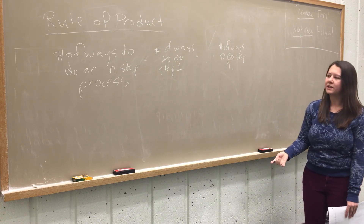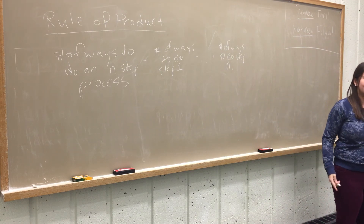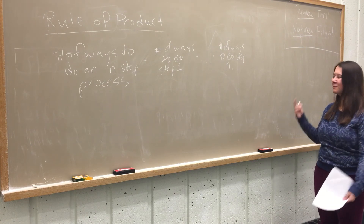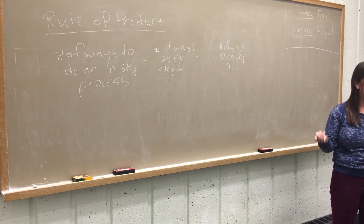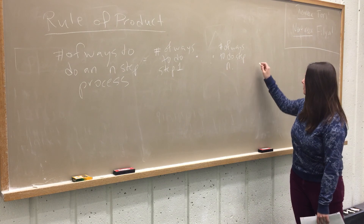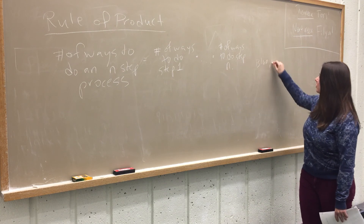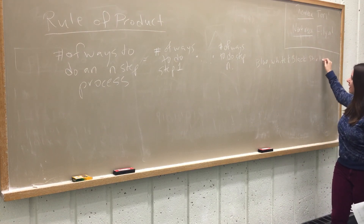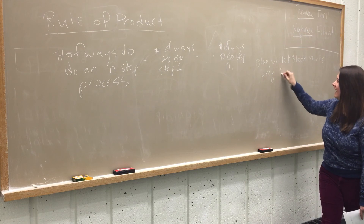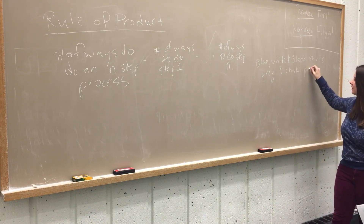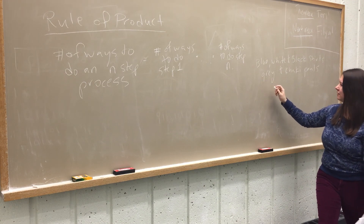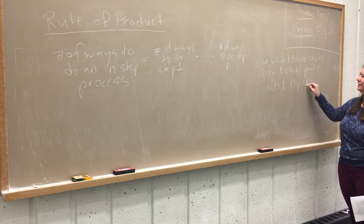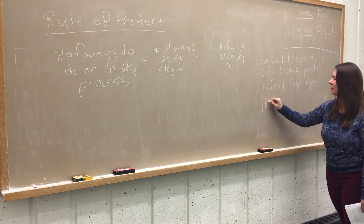Let's take a second and think about why this makes sense. This is a type of problem you've probably all seen on standardized tests — the number of outfits problem. So if I say that I have blue, white, and black shirts, and maybe gray and khaki pants, and boots and flip-flops, then I want to know how many possible outfits there are.